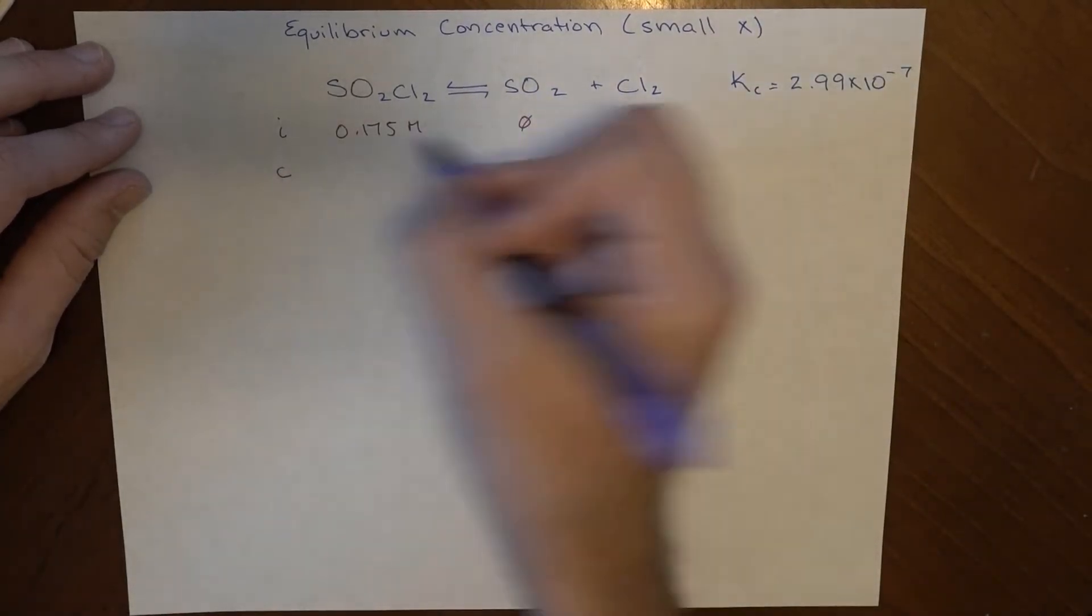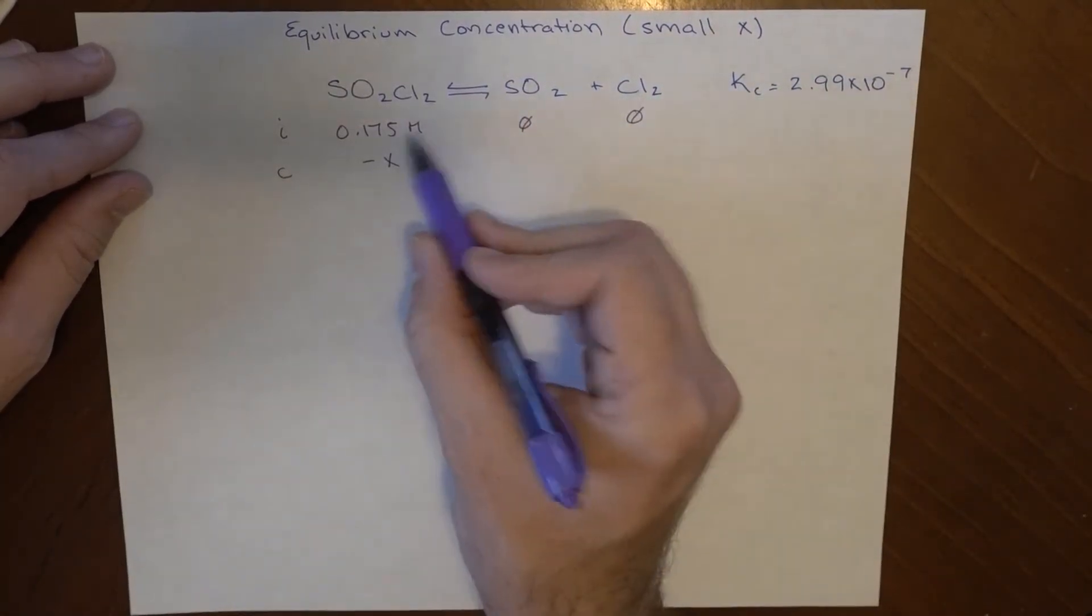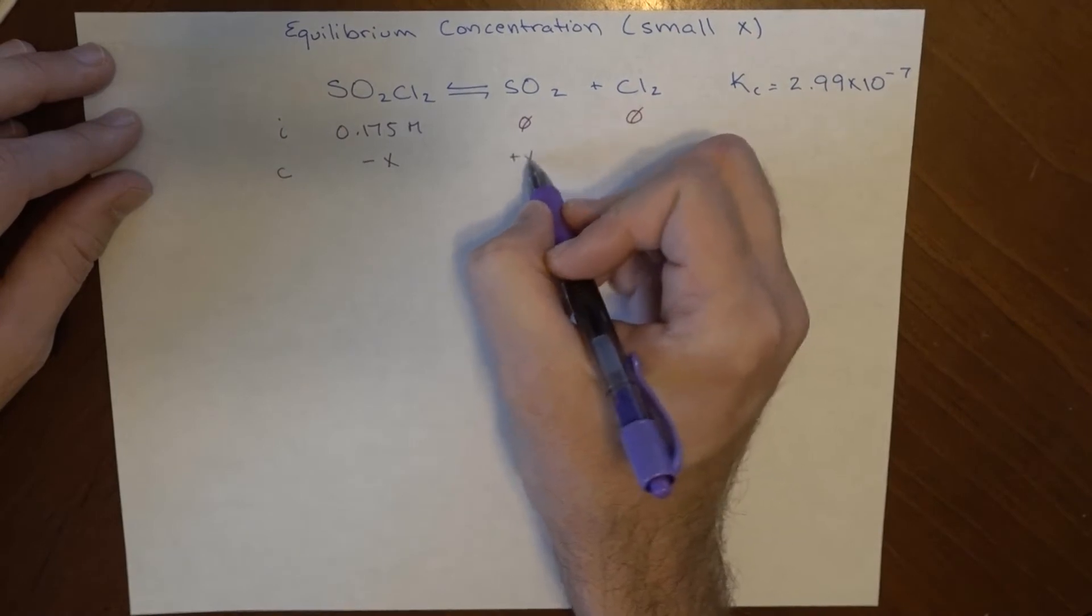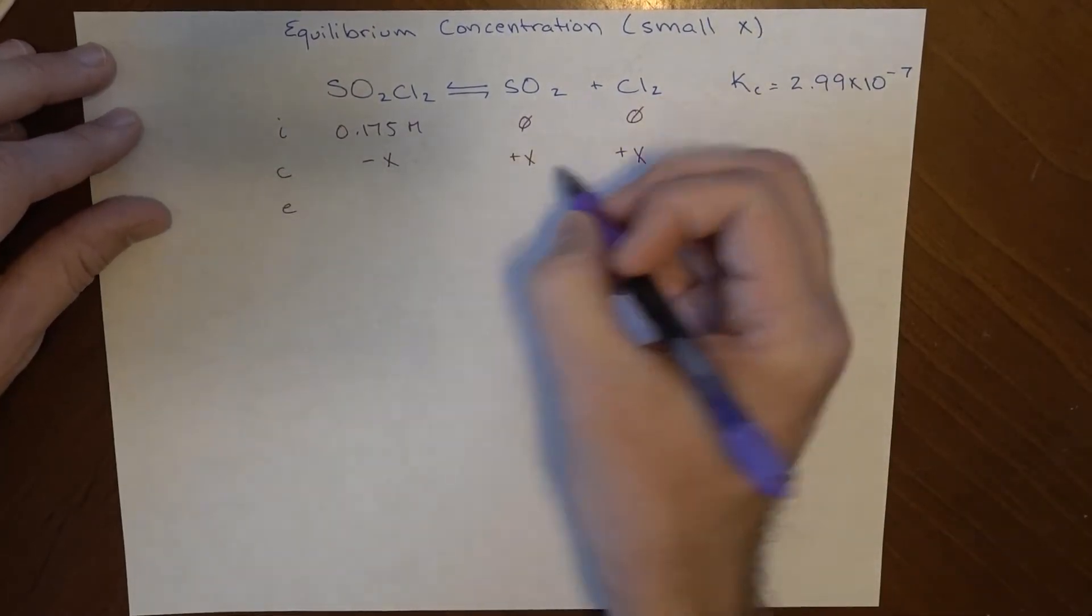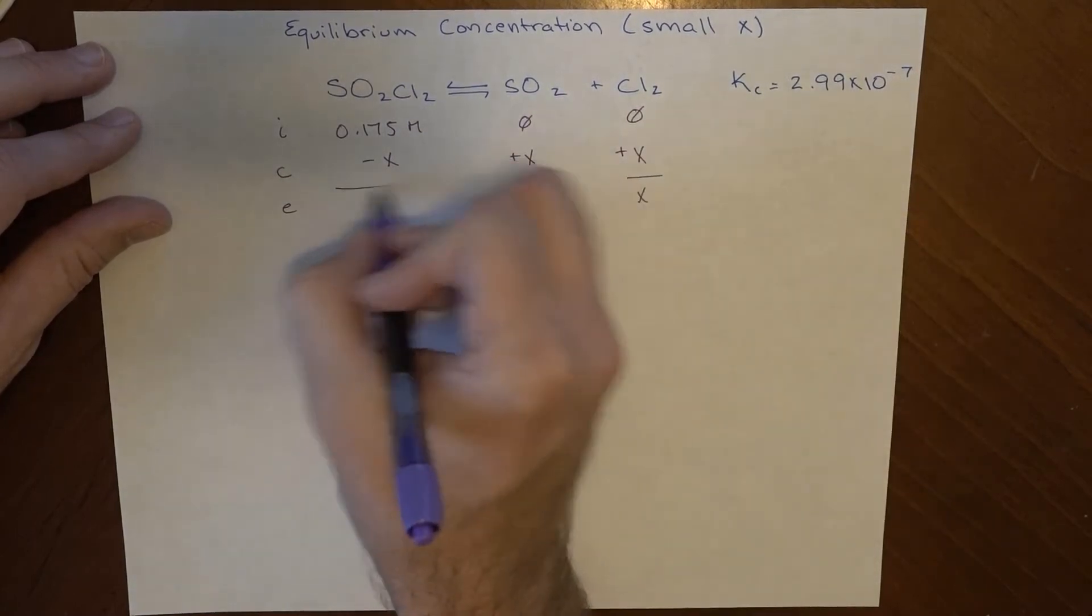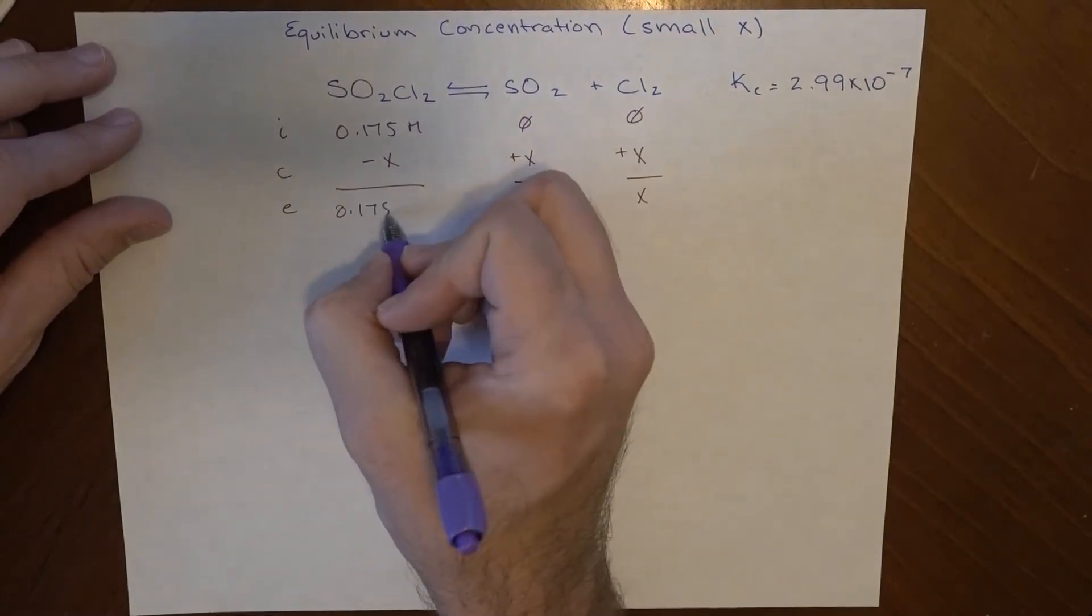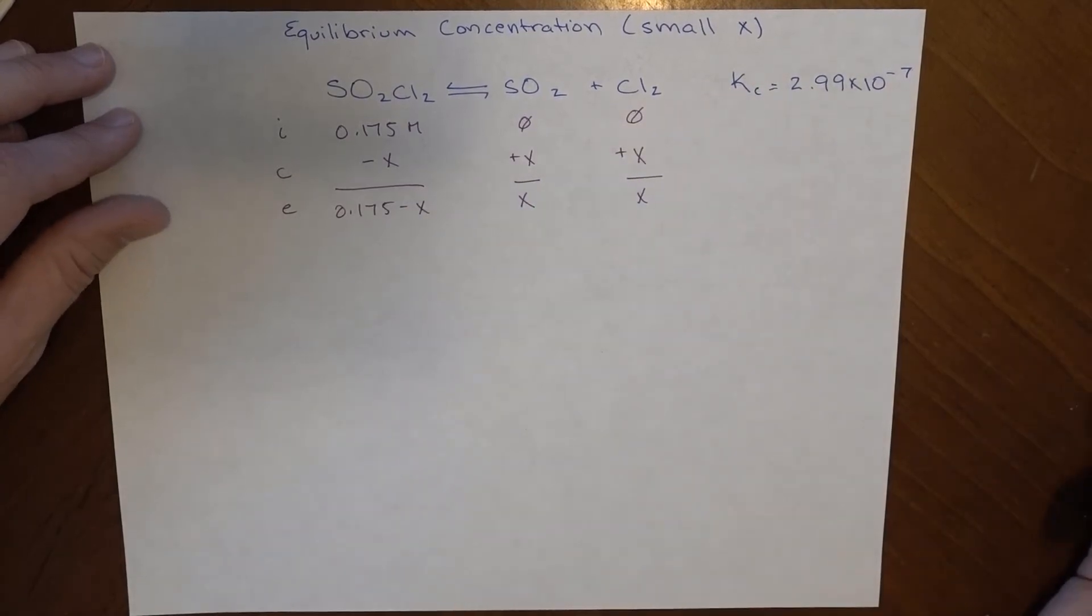So in our change, some amount of this goes away. It's a 1 to 1 molar ratio here. So some amount of this forms and the same amount of this forms. And at equilibrium, I have x of this, x of this, and 0.175 minus x of this.